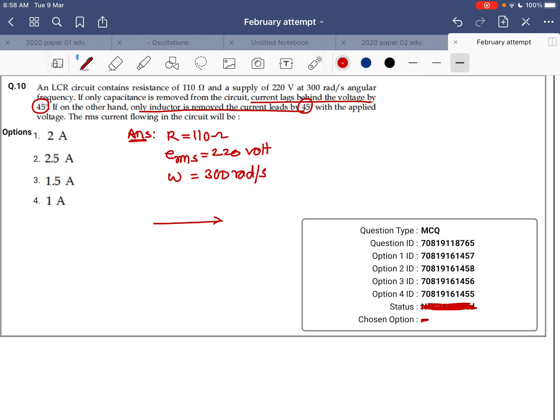When you draw the diagram here, you will see that when the capacitor is removed, the circuit is RL. When the inductor is removed, the current behavior changes accordingly by 45 degrees.